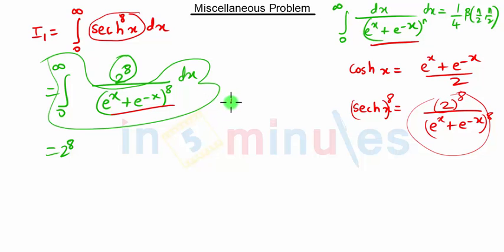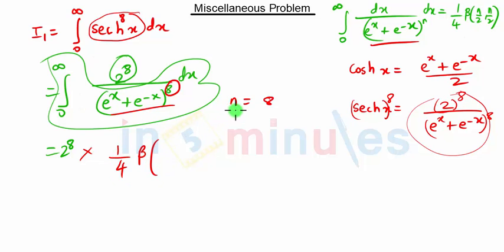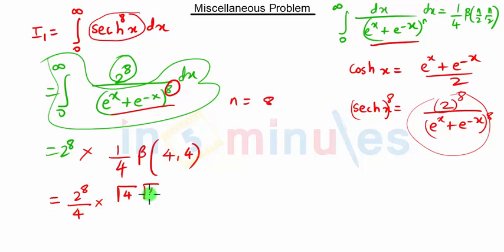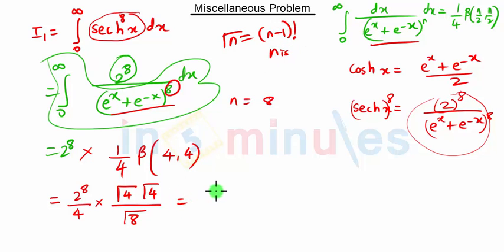With n equal to 8, the integral equals 1 upon 4 times Beta of n/2 comma n/2, that is Beta of 4 comma 4. So the full expression is 2 raised to 8 upon 4 times Beta of 4 comma 4, which equals 2^8 upon 4 times Gamma(4) times Gamma(4) upon Gamma(8). Since Gamma(n) equals (n−1)! for positive integers, this becomes 2^8 upon 4 times 3! times 3! upon 7!.